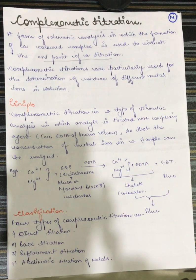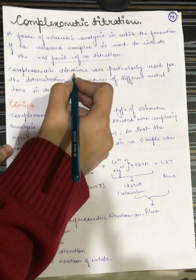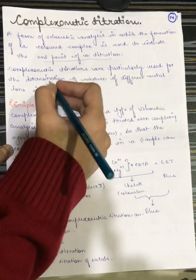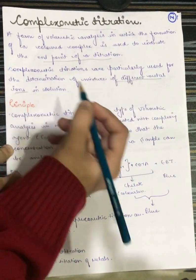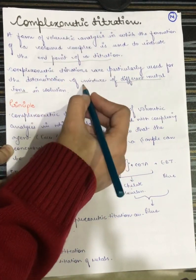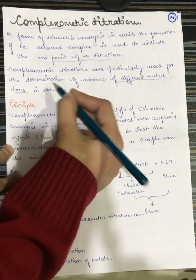Same thing that we have already seen in the previous titration as well. Now, complexometric titrations are particularly used for the determination of mixture of different metal ions. This is the main part of the complexometric titration. I mean, analysis of different metal ions in a solution.